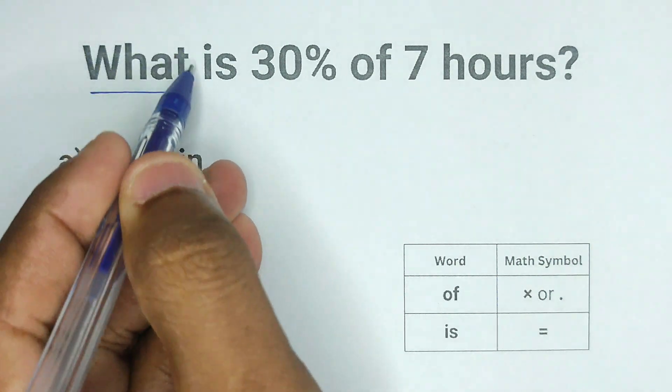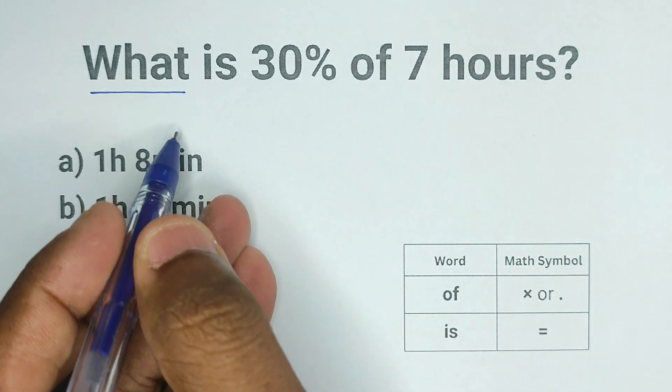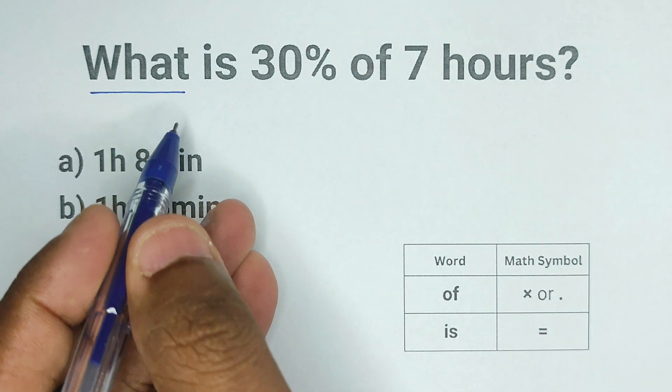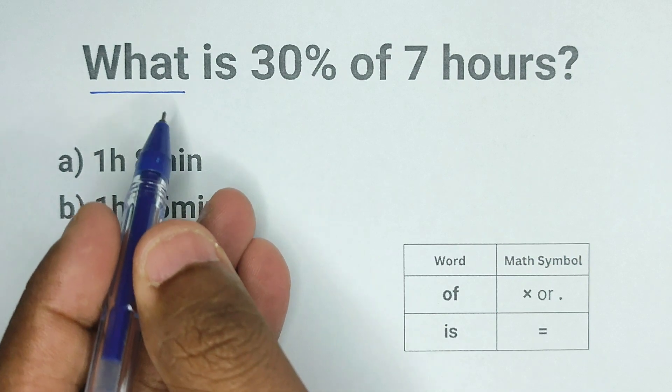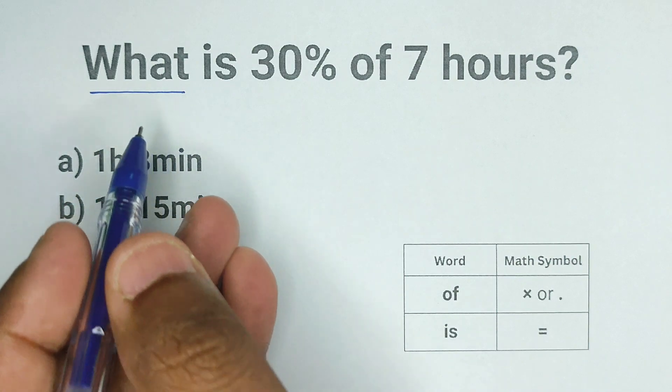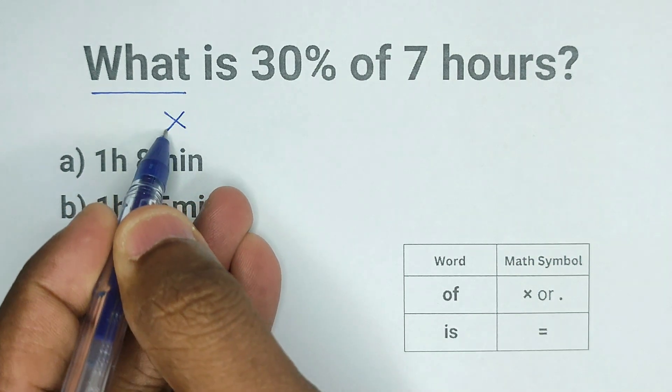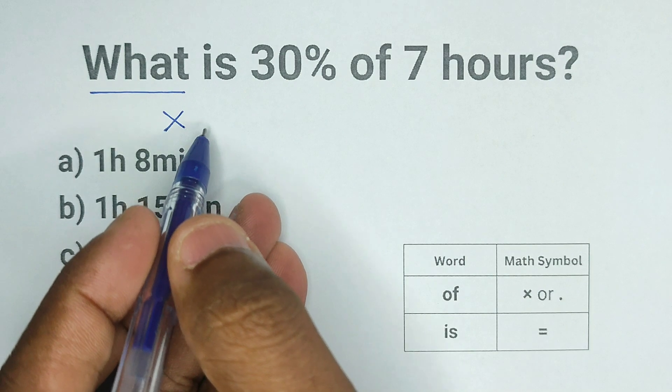This is what we are going to solve and since we don't know what this is yet, we can call it anything we want. The common letter we use for something that we don't know is x. So I'm going to put x here. Now we can keep moving to the right.